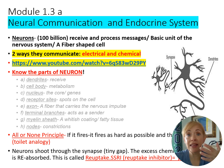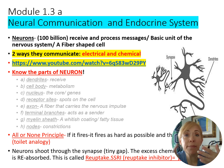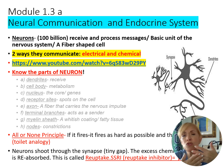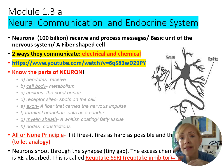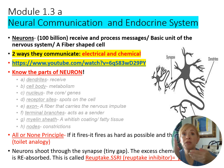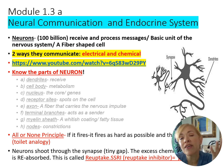Once a neurotransmitter is released into the synapse, the sending neuron can take it back — that's reuptake. An SSRI blocks this reuptake mechanism so cells can absorb more mood-elevating serotonin. SSRIs — selective serotonin reuptake inhibitors — block the take-back mechanism, allowing more serotonin to remain available, elevating mood and providing relief from depression.